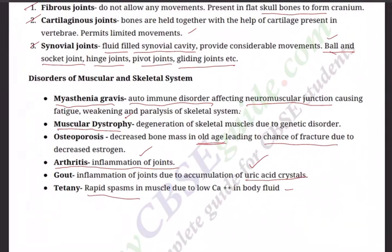Gout is inflammation of joints due to accumulation of uric acid crystals. Tetanus involves rapid spasms in muscles due to low calcium in body fluid, causing severe pain. Rheumatoid arthritis involves painful inflammation of the synovial membrane of joints; movements become extremely painful and may lead to deformities. Forced movement of affected joints even produces audible sounds. These are the various disorders of the muscular and skeletal system — let us hope future medicine will provide solutions for all these conditions.